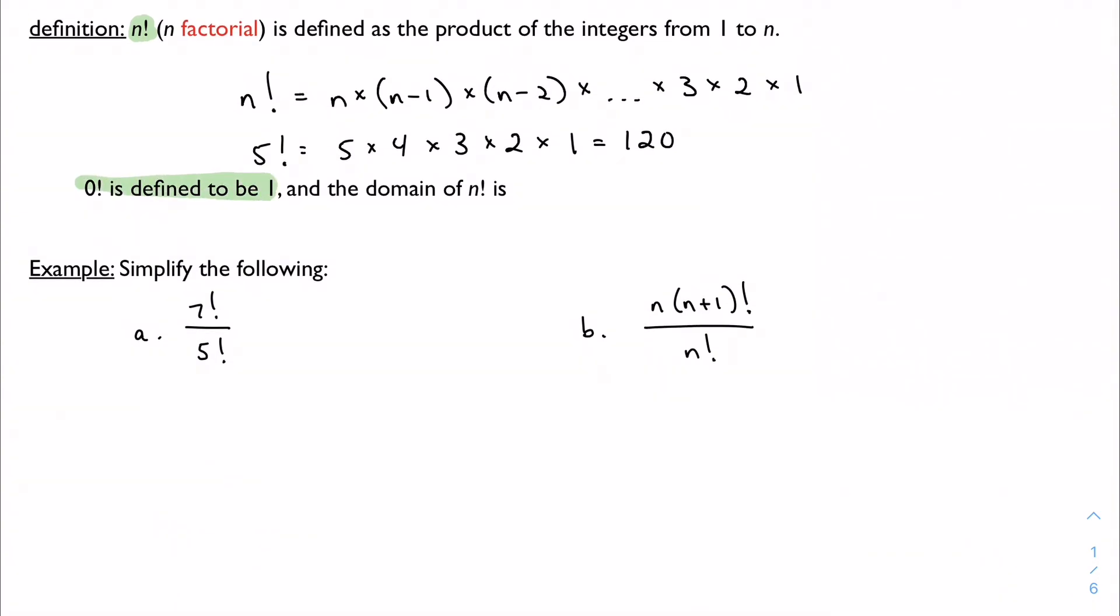0 factorial is defined to be 1. That's something maybe I'll explain in class or in a different video if I have some time. And the domain of n factorial is positive integers and 0. So we would say natural numbers here. We don't really have an easily definable notation for like 0.5 factorial or negative 3 factorial. We don't have that.